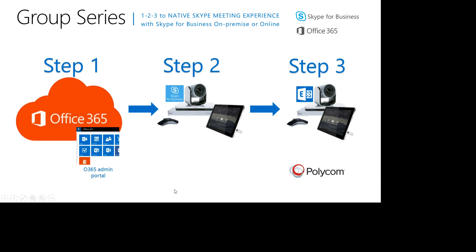What I want to show you is a one-two-three easy step process. First, we'll go through the admin portal where I will create a Skype for Business user, which we will use on the Group Series. In step two, I will show you the exact process on the Group Series through the web management. And in step three, we will also register to the Exchange Online environment.